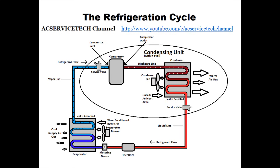You have two items that separate the low pressure and the high pressure on this system. One is the compressor that's up high, and the other is the metering device — in this picture you see it's down low.